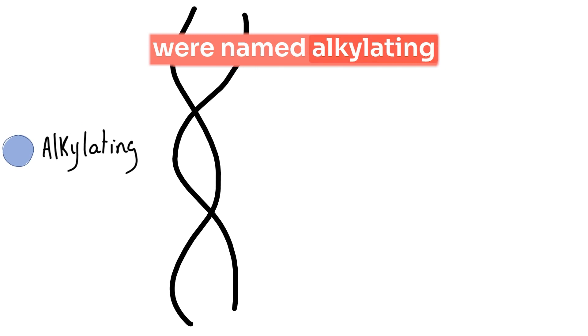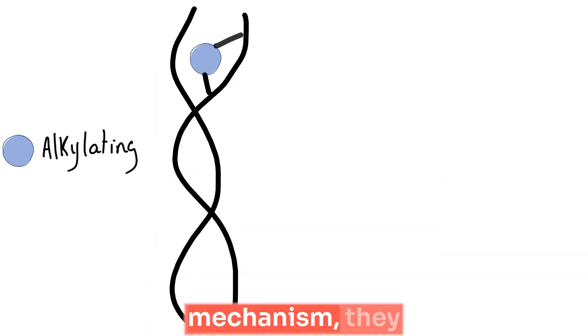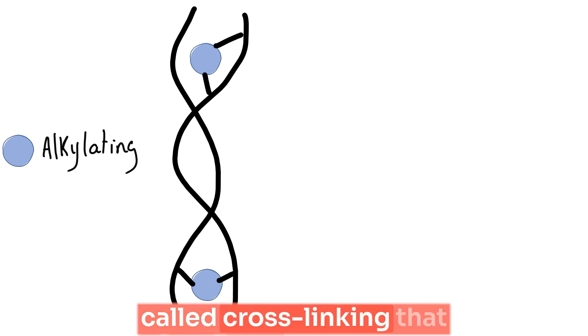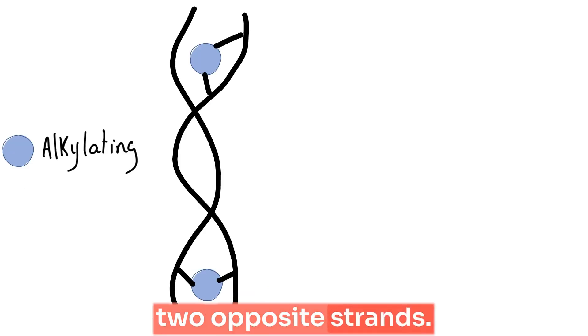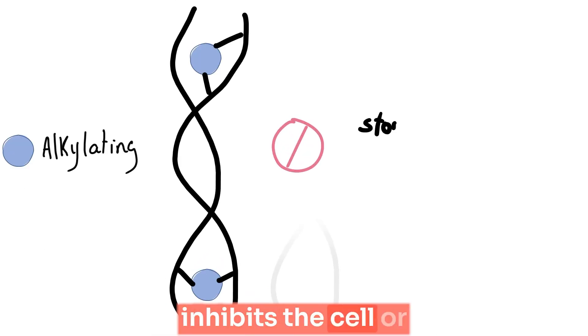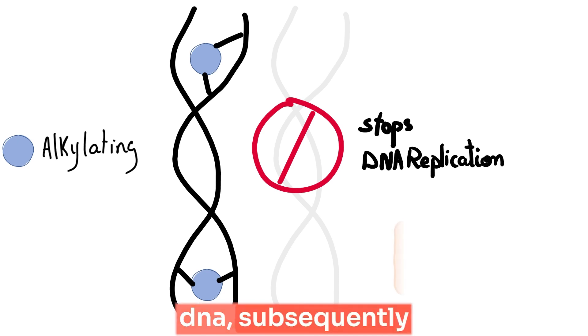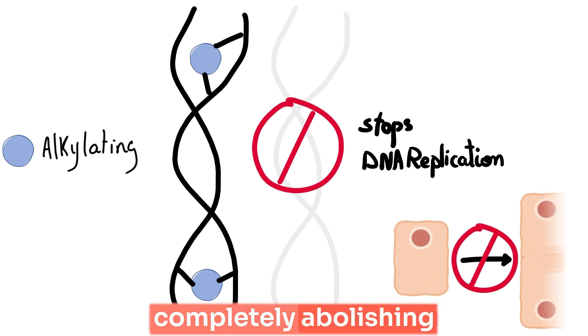Alkylating agents were named alkylating after their intracellular mechanism. They irreversibly bind to the DNA via an alkyl group in a molecular phenomenon called cross-linking that can happen with the same strand or between two opposite strands. This binding event inhibits the cell or prevents it from replicating its DNA, subsequently completely abolishing its division or its multiplication.